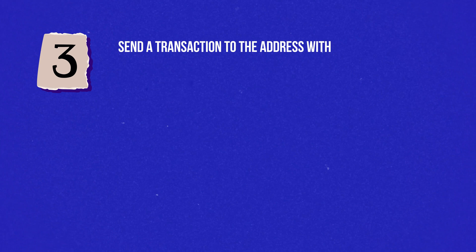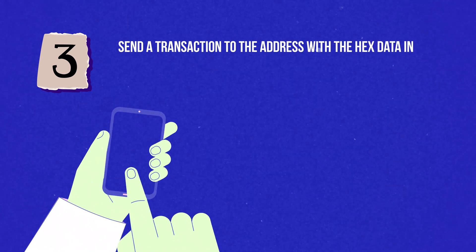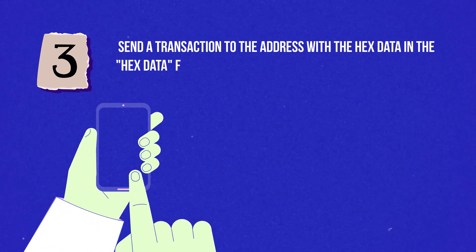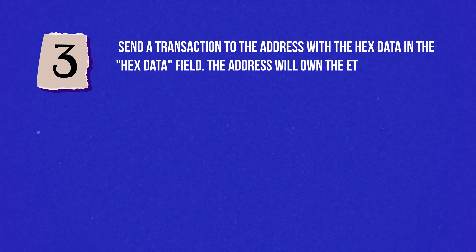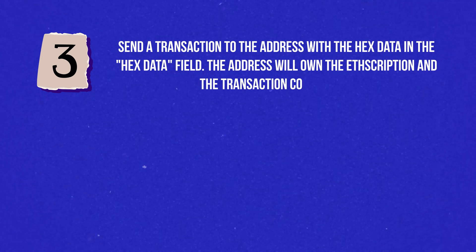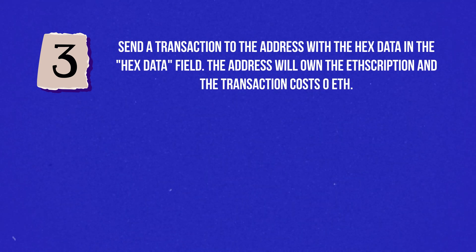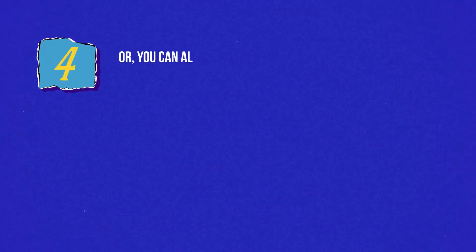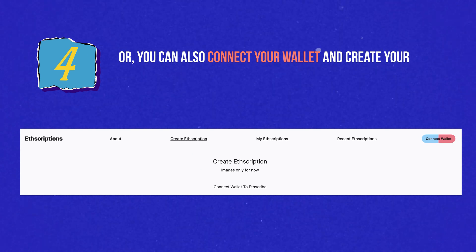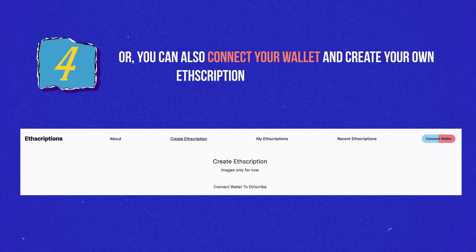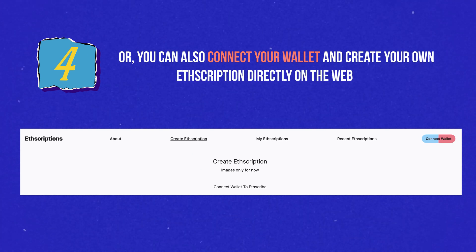And step three: send a transaction to the address with the HEX data in the HEX data field. The address will own the ETHSCRIPTION and the transaction costs zero ETH. Alternatively, step four: you can connect your wallet and create your own ETHSCRIPTION directly on the website.